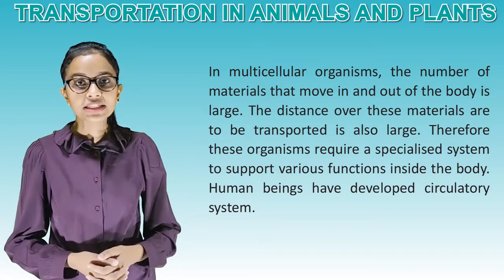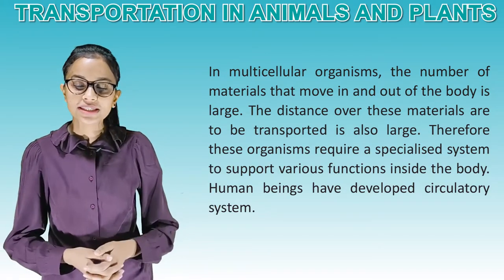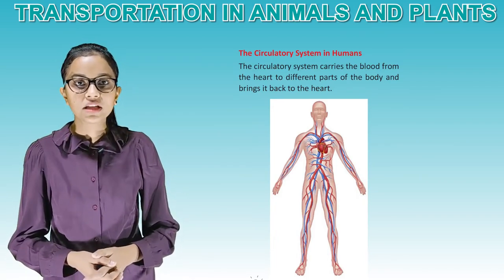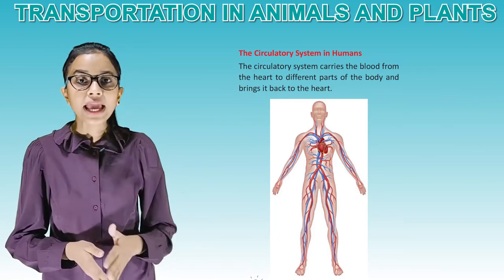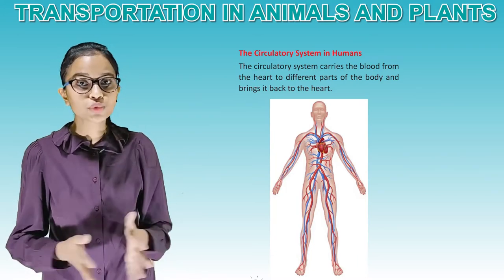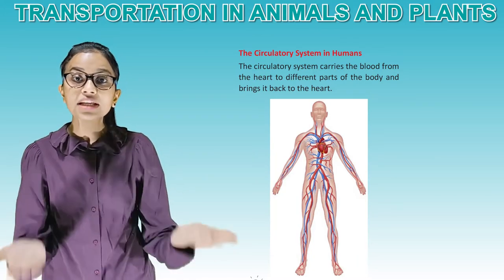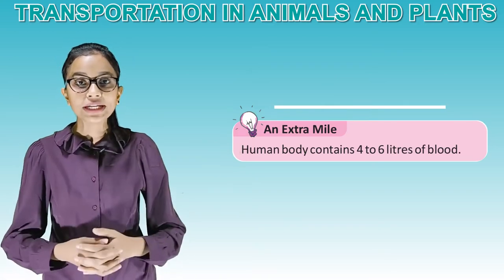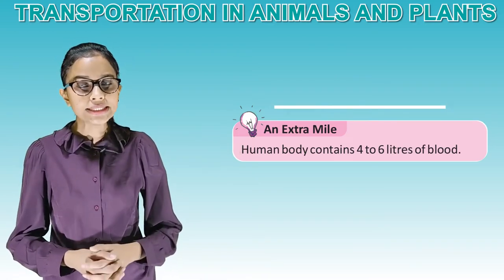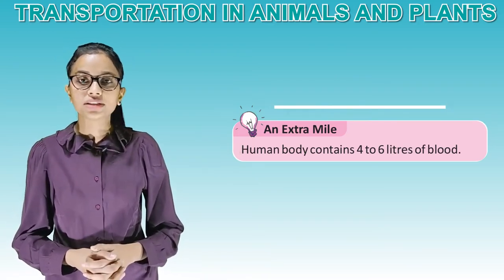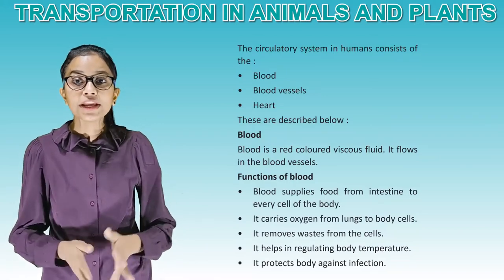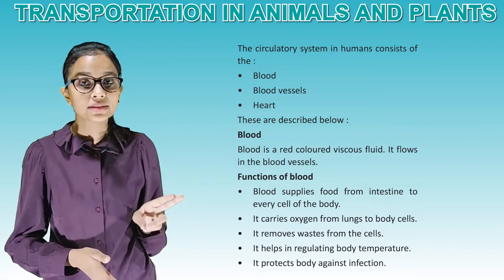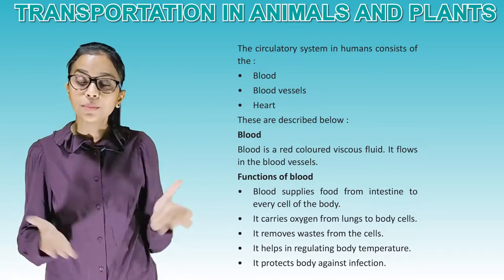Human beings have developed a circulatory system. The circulatory system carries the blood from the heart to different parts of the body and brings it back to the heart. Human body contains 4 to 6 liters of blood. The circulatory system in humans consists of blood, blood vessels, and heart.